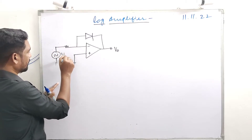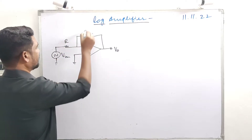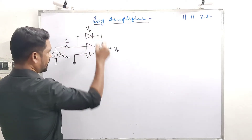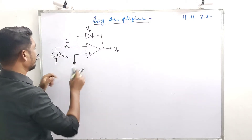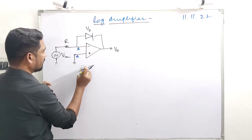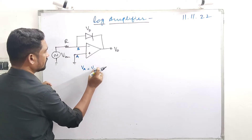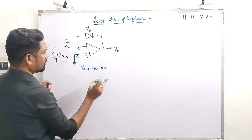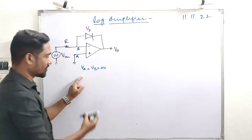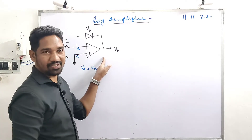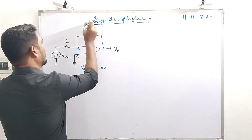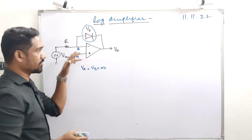Here we have Vin, a resistor, and voltage across the diode VD, also called VF. If we label points A and B, then VA equals VB equals 0 volts according to the virtual ground concept. So the virtual ground concept applies here. One of the important aspects involves the current applications of this circuit, where the diode is associated and creates diode interference.